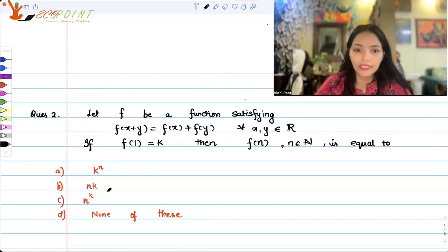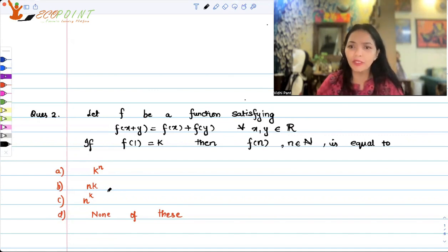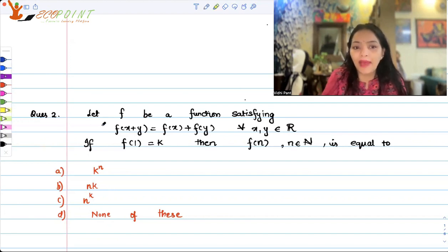Welcome to the next question. Today in this video I'll be discussing a couple of questions which are similar to each other. They are based on patterns. Suppose you have a function which is satisfying a pattern like this: f(x+y) = f(x) + f(y) for all x, y belonging to R. If f(1) = k, then f(n), where n is a natural number, is equal to...